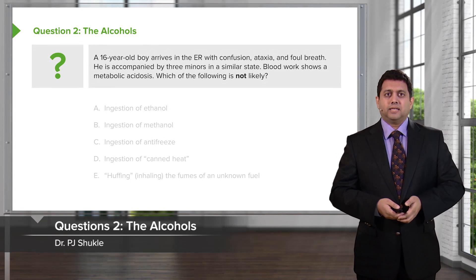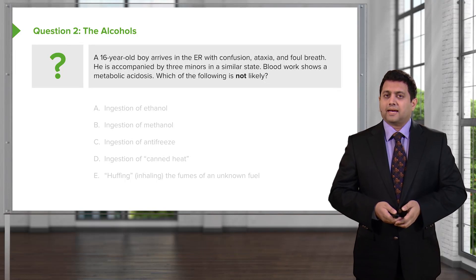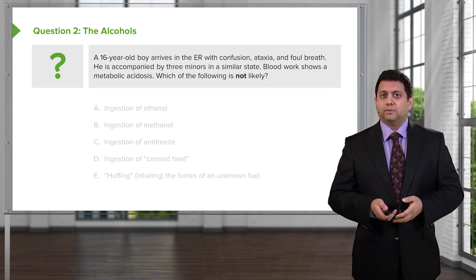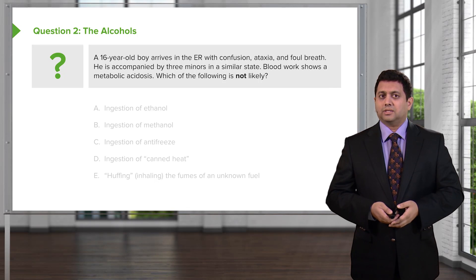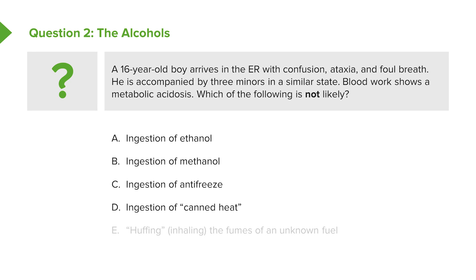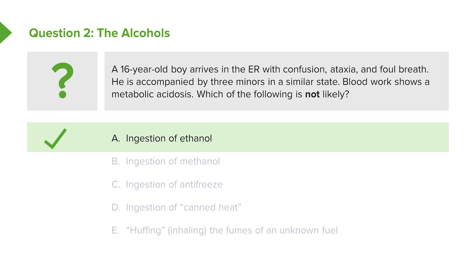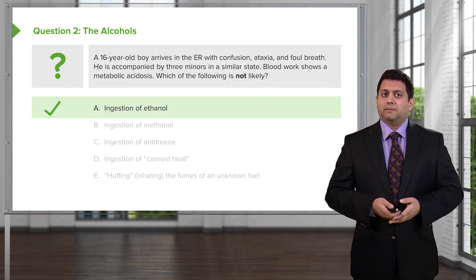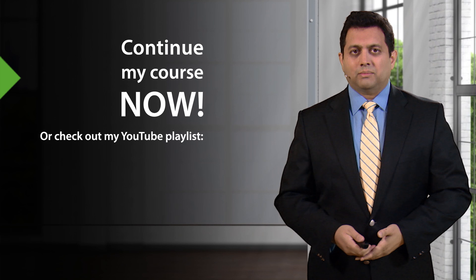Let's go on to the next question. A 16-year-old boy arrives in the emergency room with confusion, ataxia, and foul breath. He's accompanied by three minors in a similar state. Blood work shows a metabolic acidosis. Which of the following is not likely? The choices are ingestion of ethanol, methanol, antifreeze, canned heat, or huffing the fumes of an unknown fuel. The answer is ethanol — because ingestion of ethanol will not cause a metabolic acidosis, whereas all of the others can.